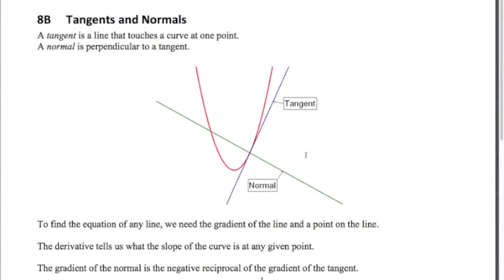Welcome to this video where we're going to be dealing with tangents and normals. This is the second video in the differentiation series. A tangent is a line that just touches a curve at one spot — that's the blue line you see there — and a normal is a line that is perpendicular to the tangent. It goes through the same point on the curve, but it's at 90 degrees to the tangent.